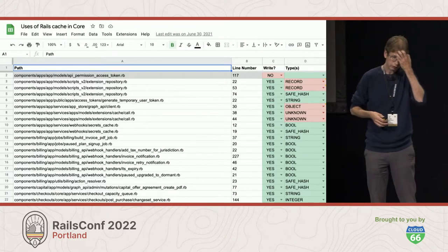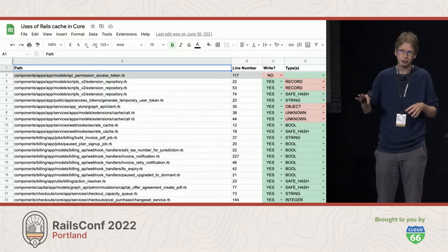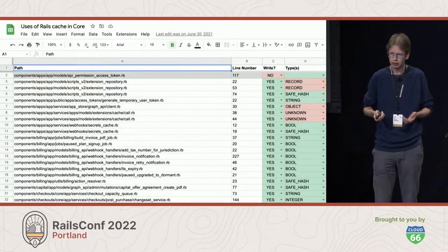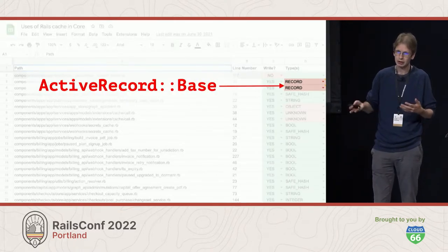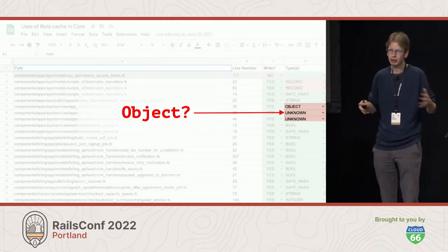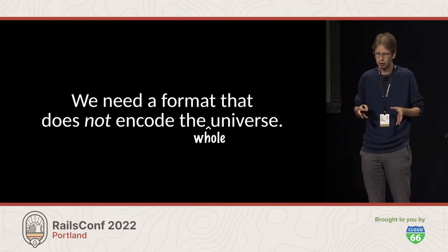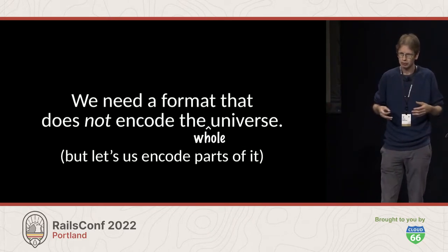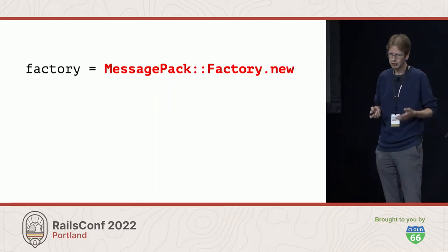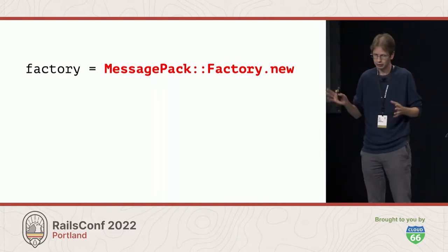We did a grep of our core monolith to see where we were calling Rails.cache.write and Rails.cache.read, to know what kinds of things were going into the cache. Of course there's a lot of stuff beyond those core types — we clearly had records going in there, and also objects we didn't even know the type of necessarily. So we need more than just the default MessagePack types. We need a format that does not encode the whole universe but allows us to encode parts of it. MessagePack actually does this, and this is really the killer feature for us of this gem.